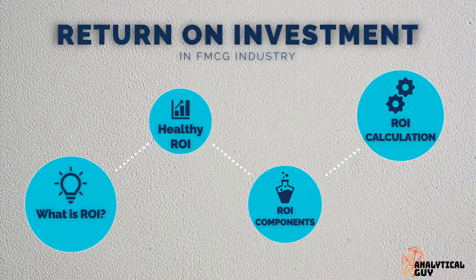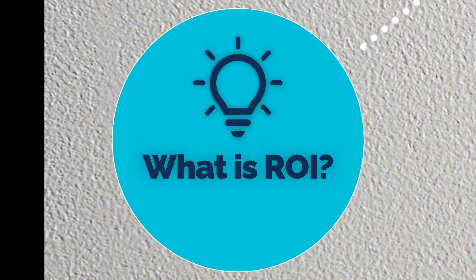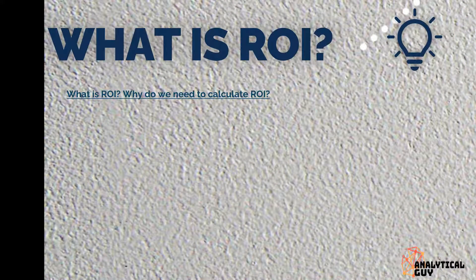Hello everyone, welcome to my channel Analytical Guide. Today we are going to discuss a very important topic for FMCG distributors and stakeholders of FMCG sales teams — that is Return on Investment, ROI. We will discuss ROI, what a healthy ROI should be, the components, and have a case study with calculation. ROI is a widely used financial metric in the FMCG industry. If you are a salesman, sales manager, or distributor, this video will be very beneficial to help you make informed decisions.